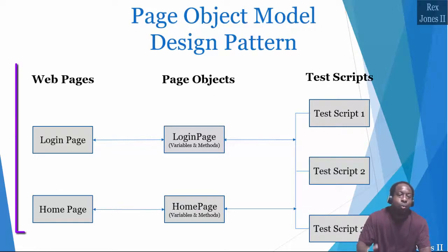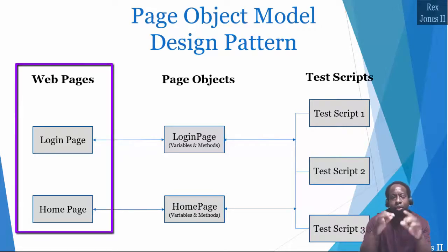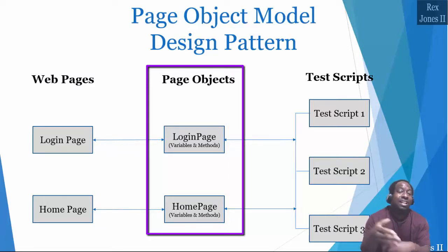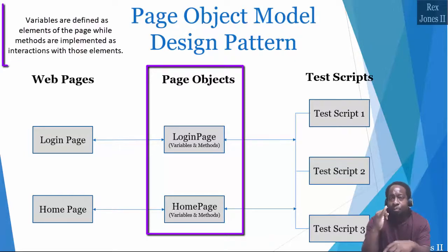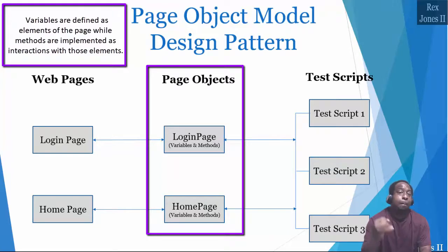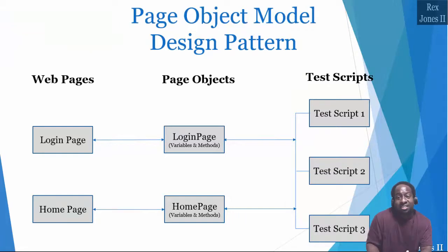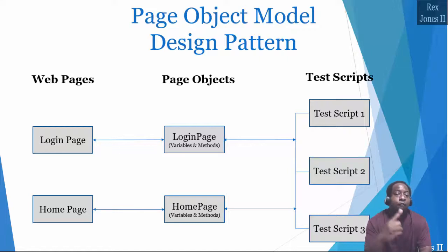Each web page or section of a web page is represented by a page object. In this example, we see the web pages: login page and home page. Both pages have their own page object. The page object is a class, and within that class we have class members — variables and methods. Variables are defined as elements of the page, while methods are implemented as interactions with those elements. The test scripts reuse a page object when it needs to interact with a particular page. Note that there is more than one way for designing a page object model, so people will do things a little differently.